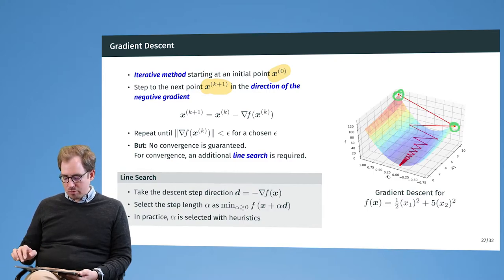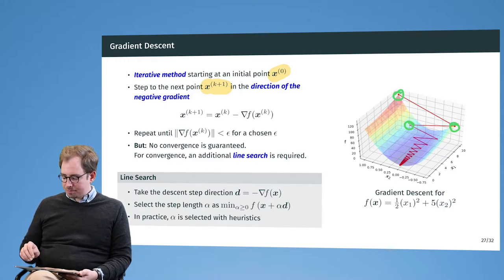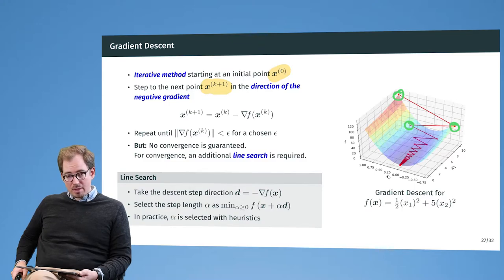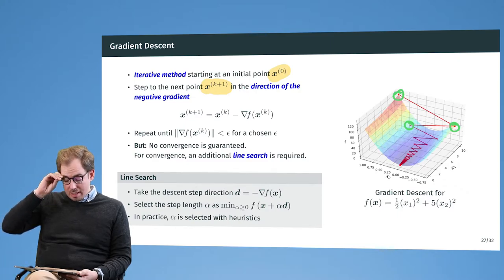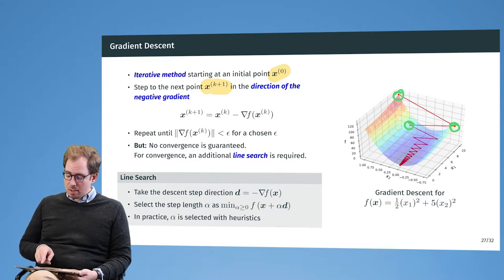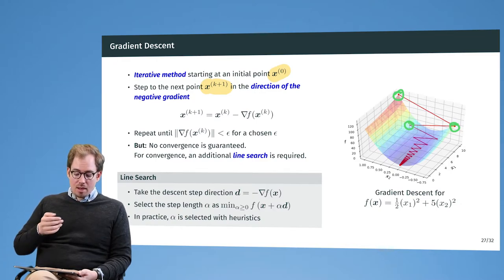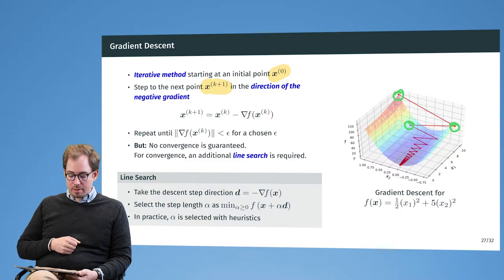We start with x0, take a first gradient step, then take the gradient at the new location, take another step, and so on. Even in this pretty small, easy example, it takes about 130 steps to get to the minimum — not exactly, but up to an epsilon of around a thousandth. So gradient descent works and we can always get to the minimum, but it might take quite a lot of time, especially in higher dimensions. Here we are only in two dimensions with an easy function and already need 130 steps, but it does work.